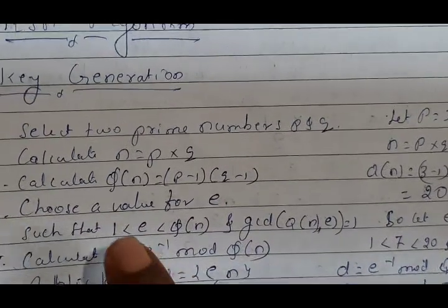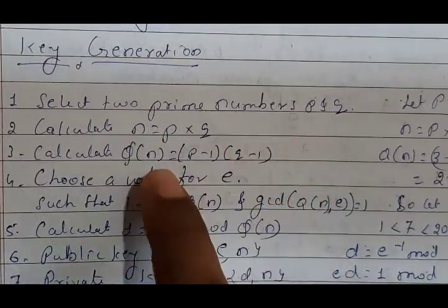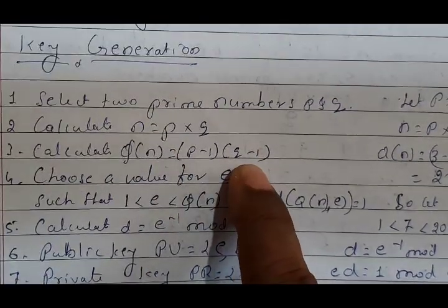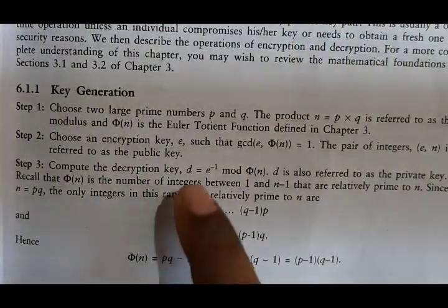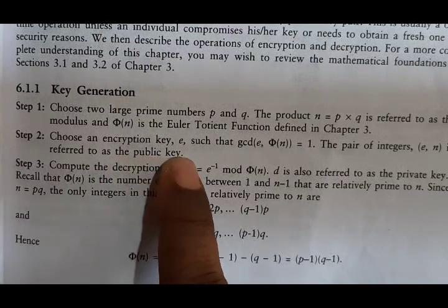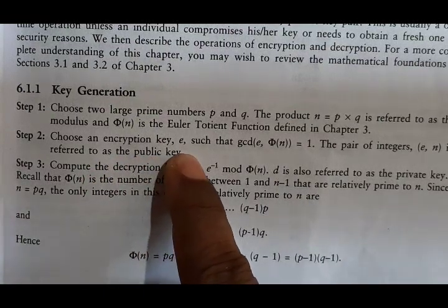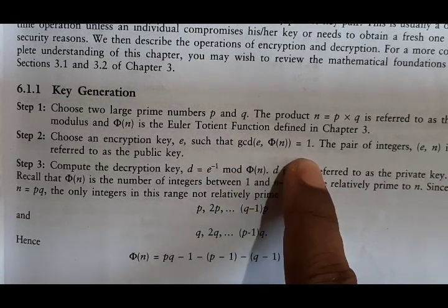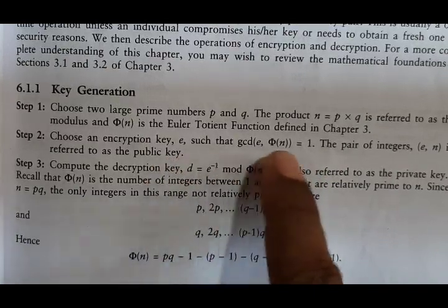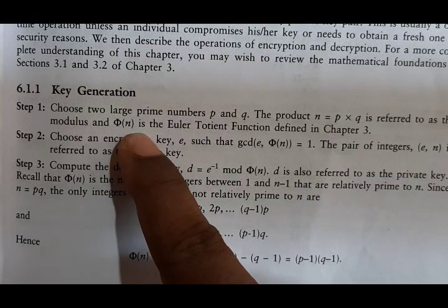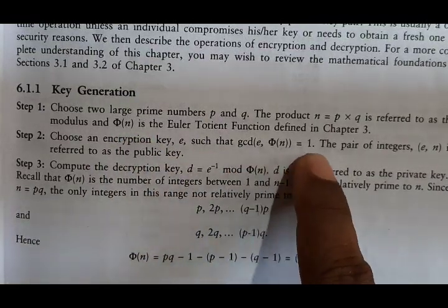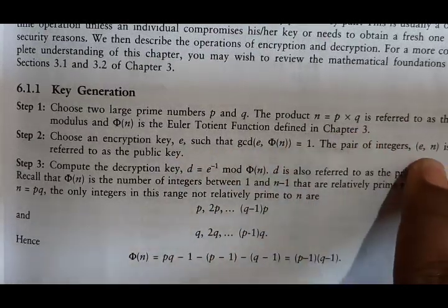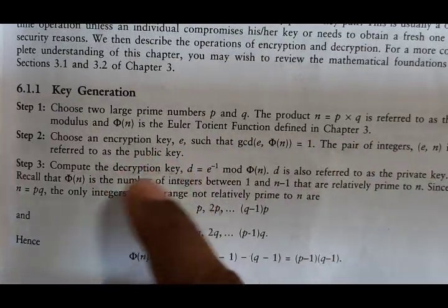After computing N and φ(N), choose an encryption key E such that GCD of E and φ(N) is equal to 1. E must be greater than 1 and less than φ(N), and GCD of E and φ(N) must equal 1. The pair of integers E and N is referred to as the public key.